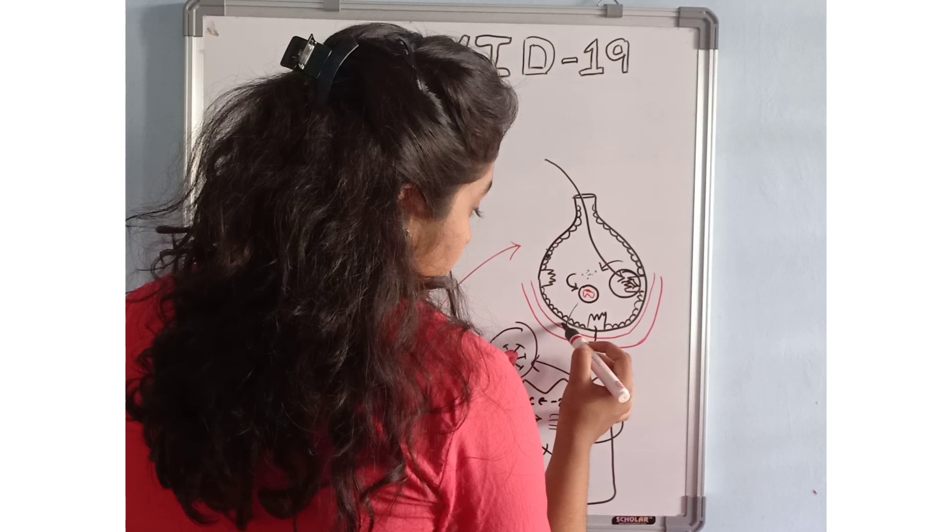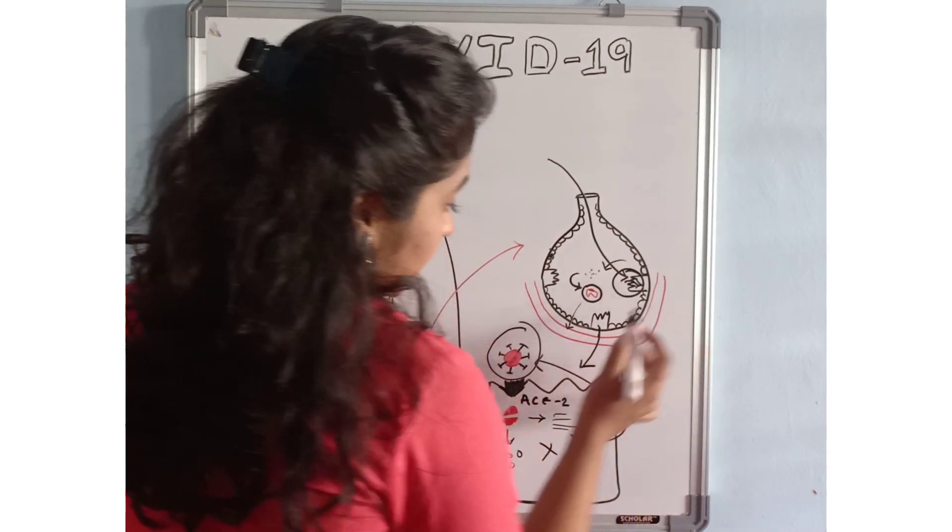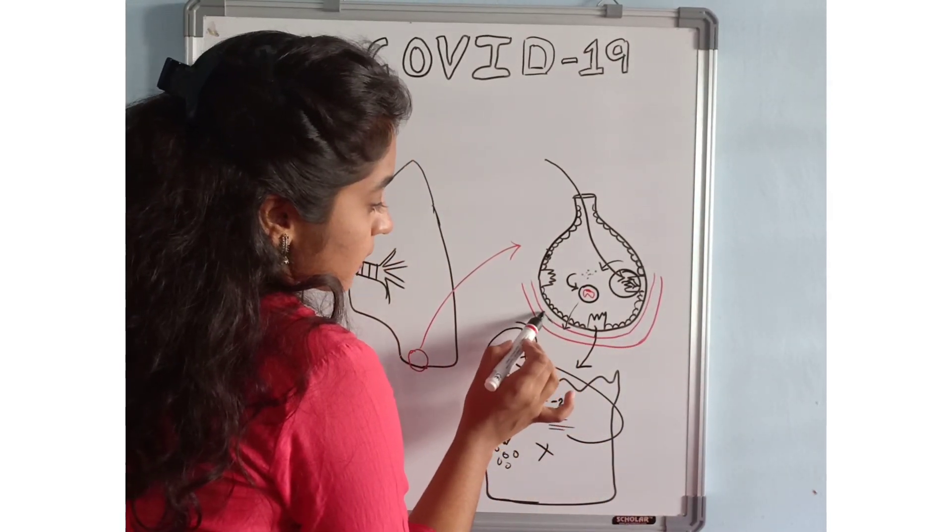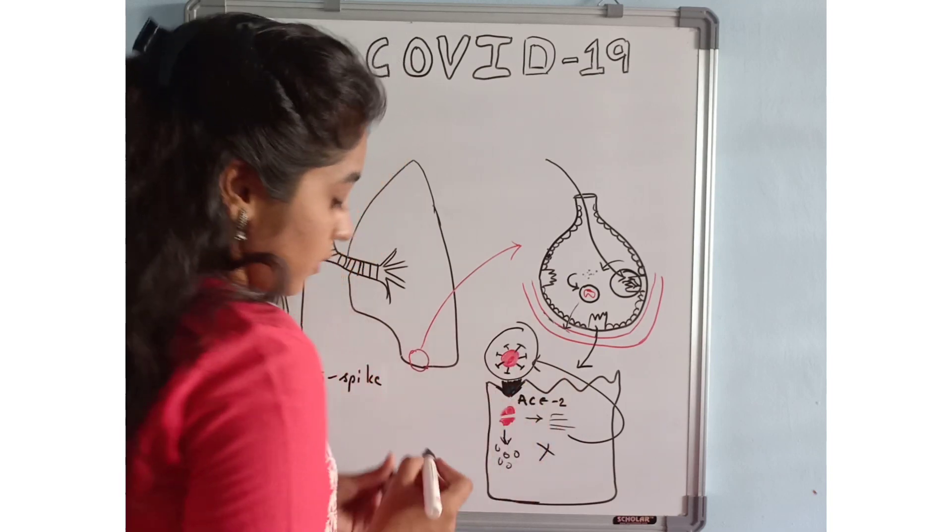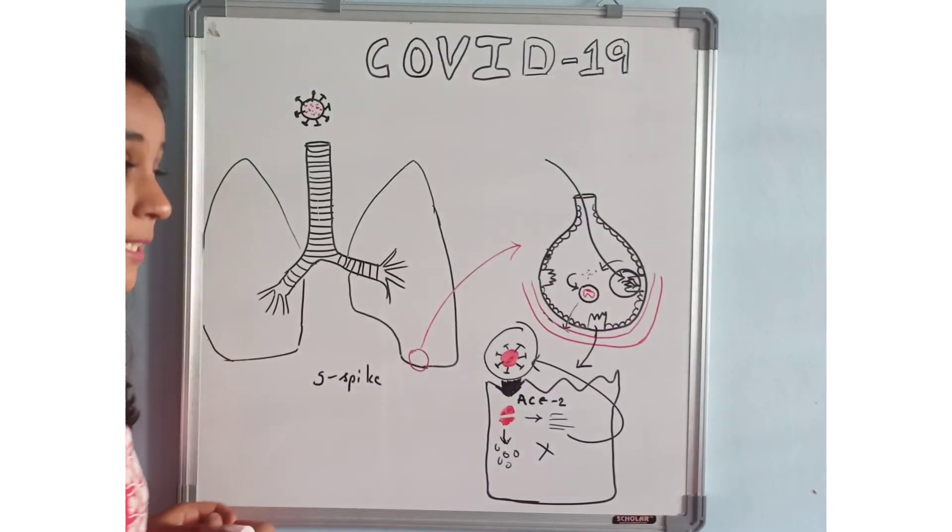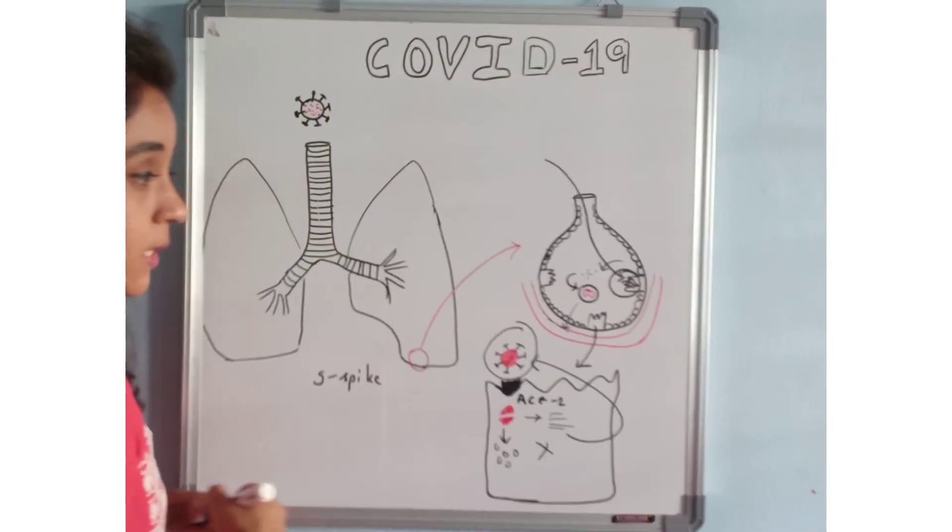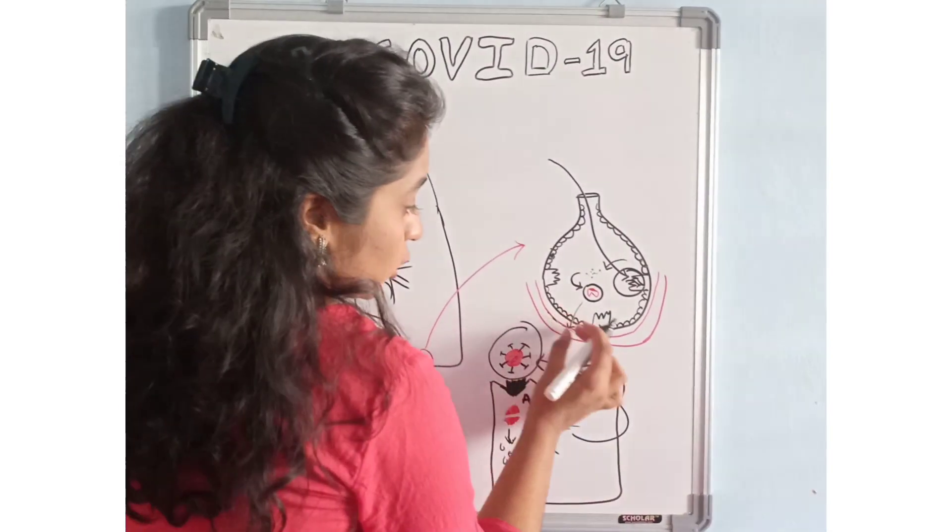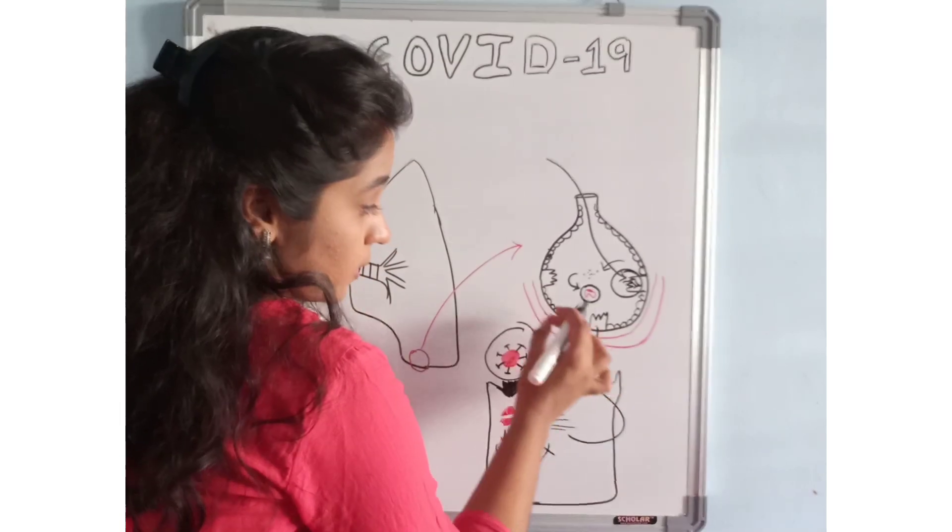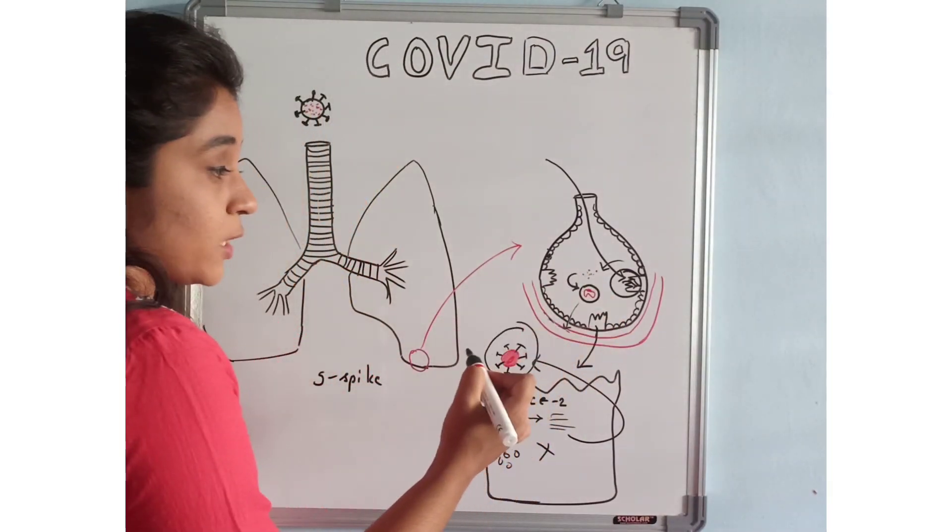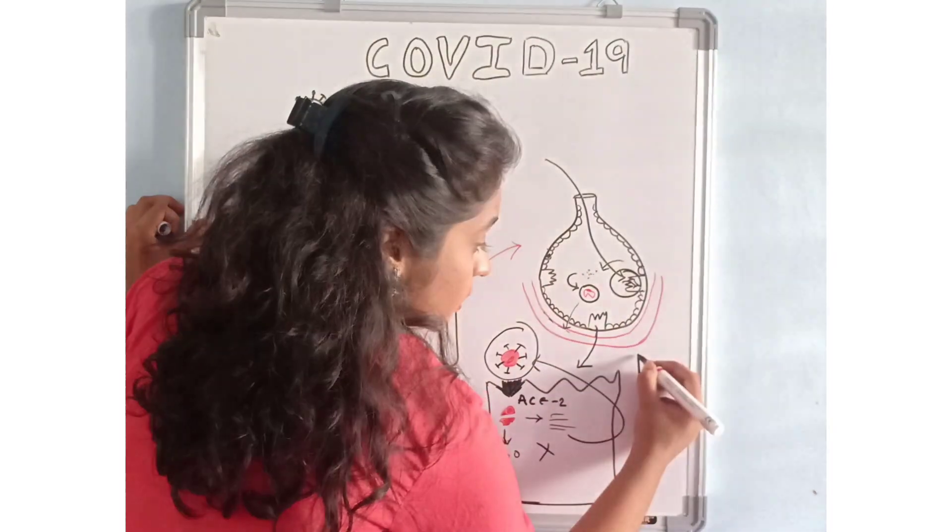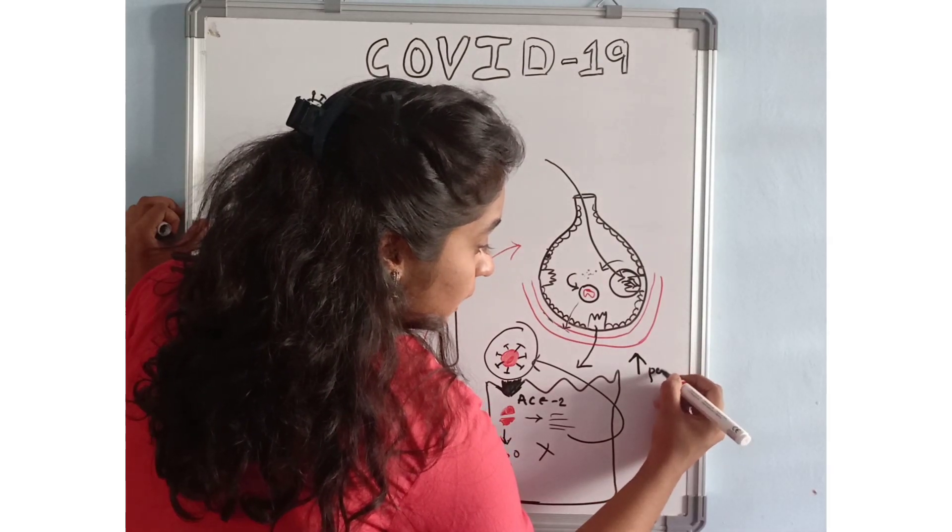This is a capillary. The endothelial cells of our capillary will undergo vasodilation. Vasodilation means that the endothelial cells undergo vasodilation and that will cause increased permeability.